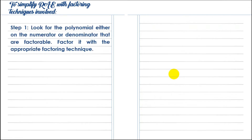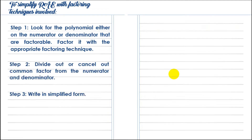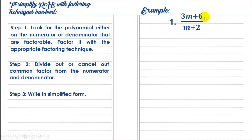To simplify RAE with factoring techniques involved, here are the steps to follow. Step 1: look for the polynomial either on the numerator or denominator that are factorable — we will check which one is factorable. Step 2: divide out or cancel out the common factor from the numerator and denominator. Write it in simplified form.